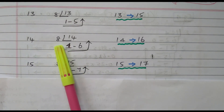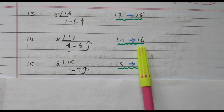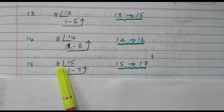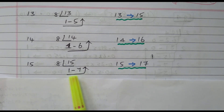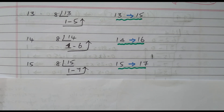For decimal 14, divide by 8: 1 time with remainder 6 — writing in reverse gives 16. So the octal equivalent of decimal 14 is 16. For decimal 15, divide by 8: 1 time with remainder 7 — writing in reverse gives 17. So the octal equivalent of decimal 15 is 17.